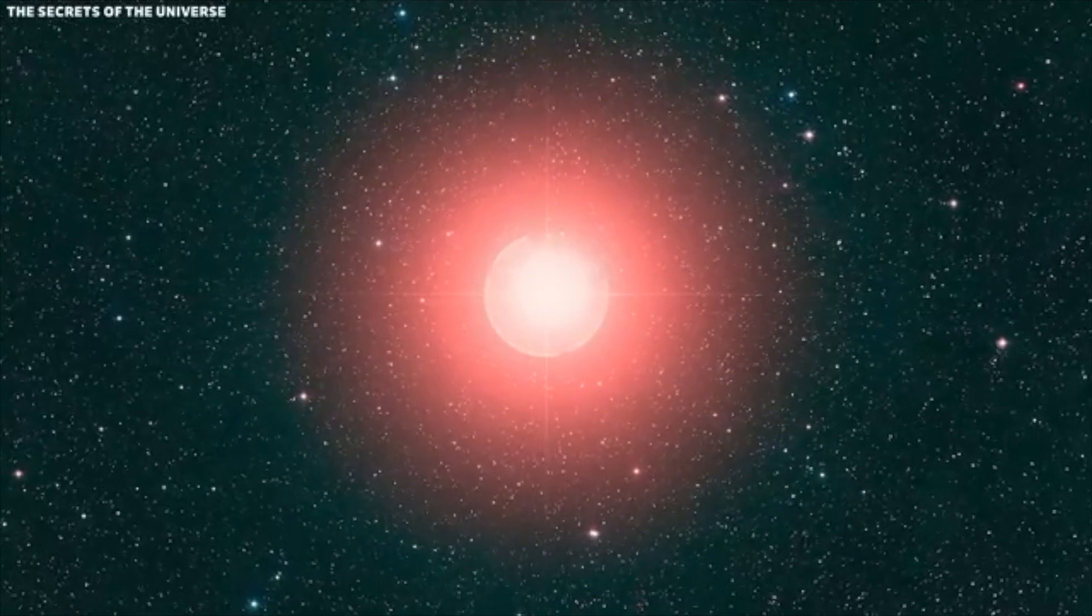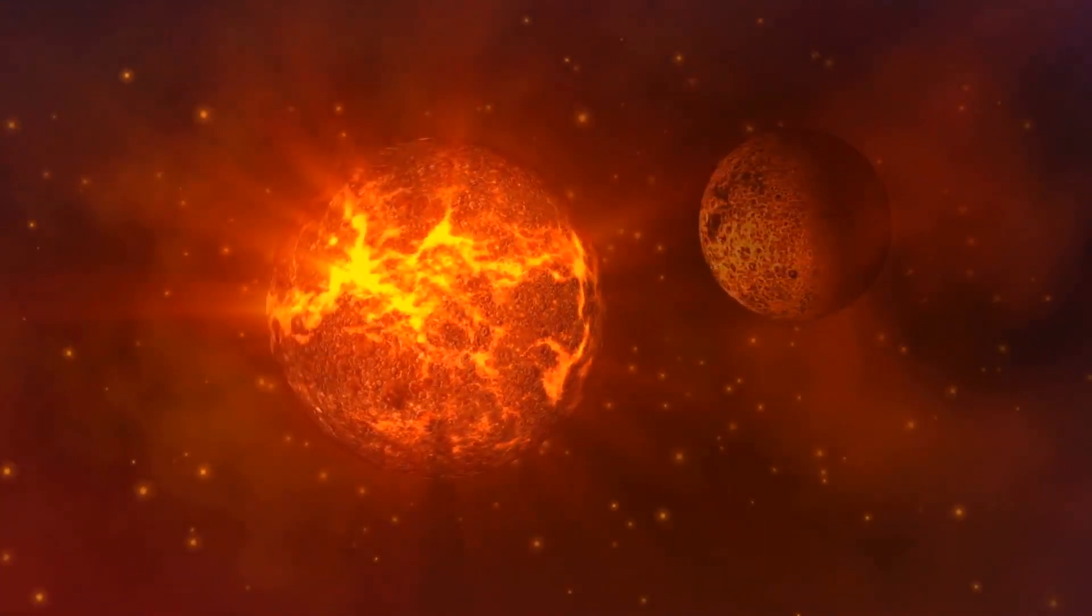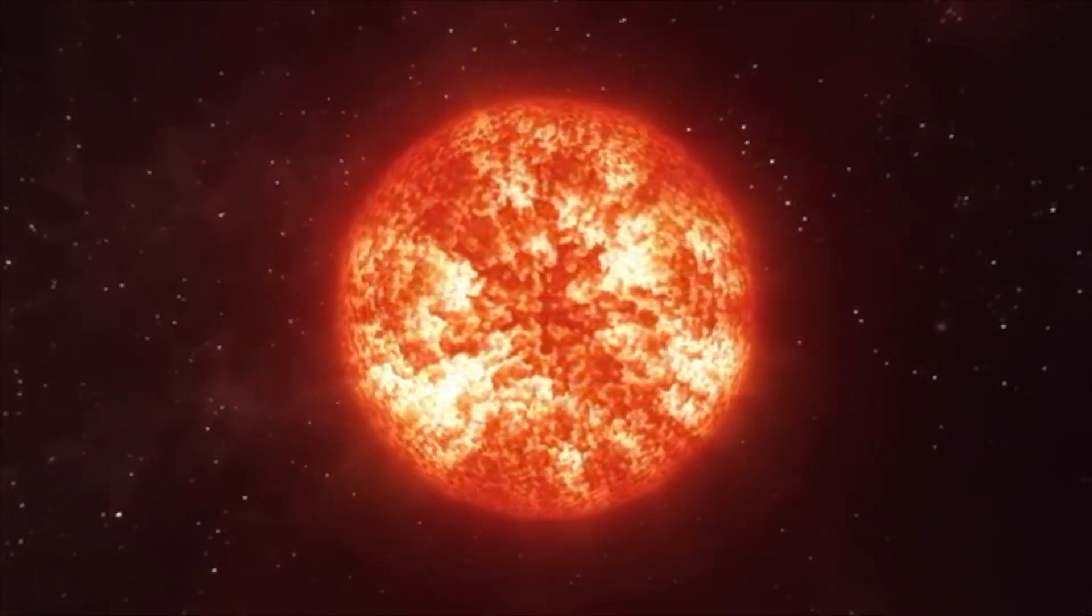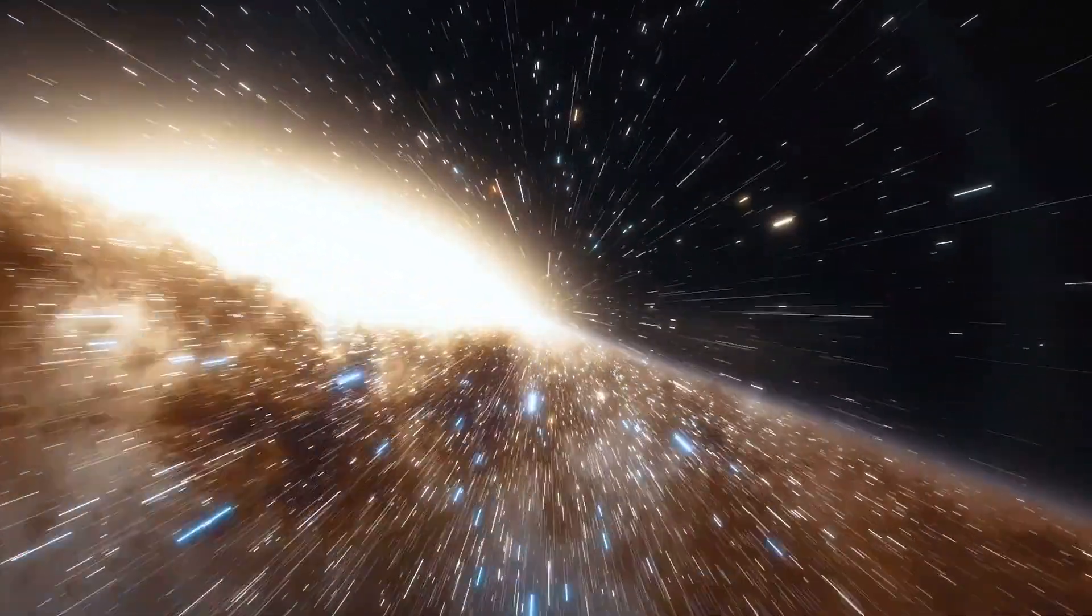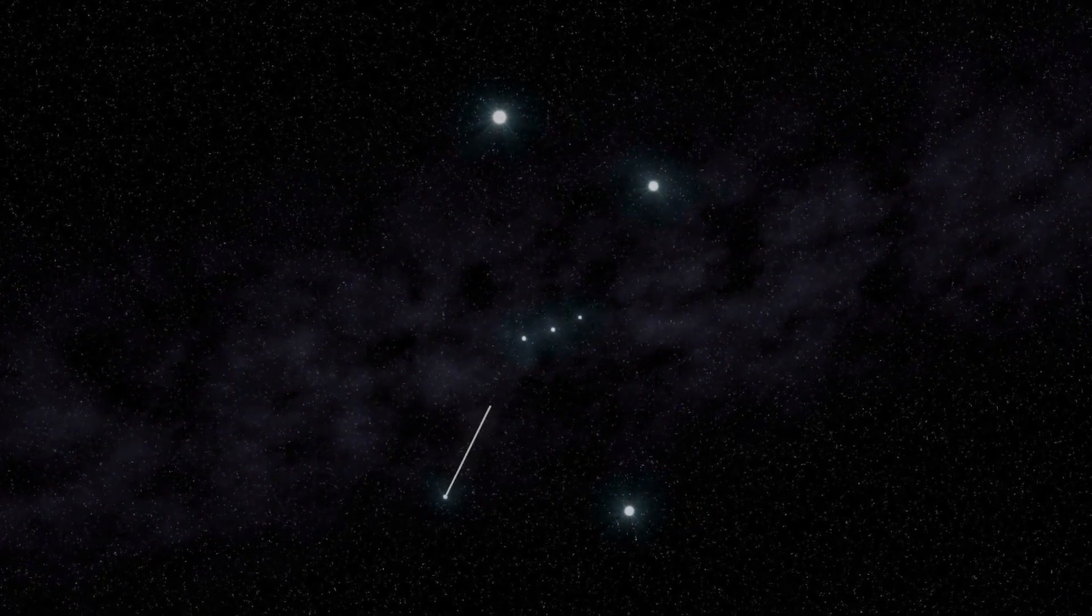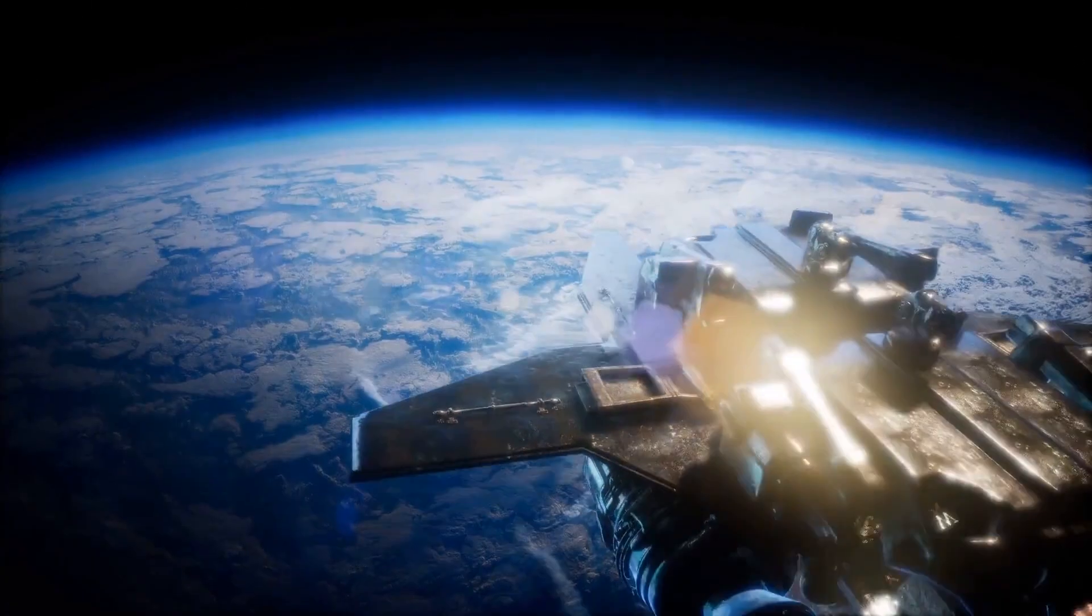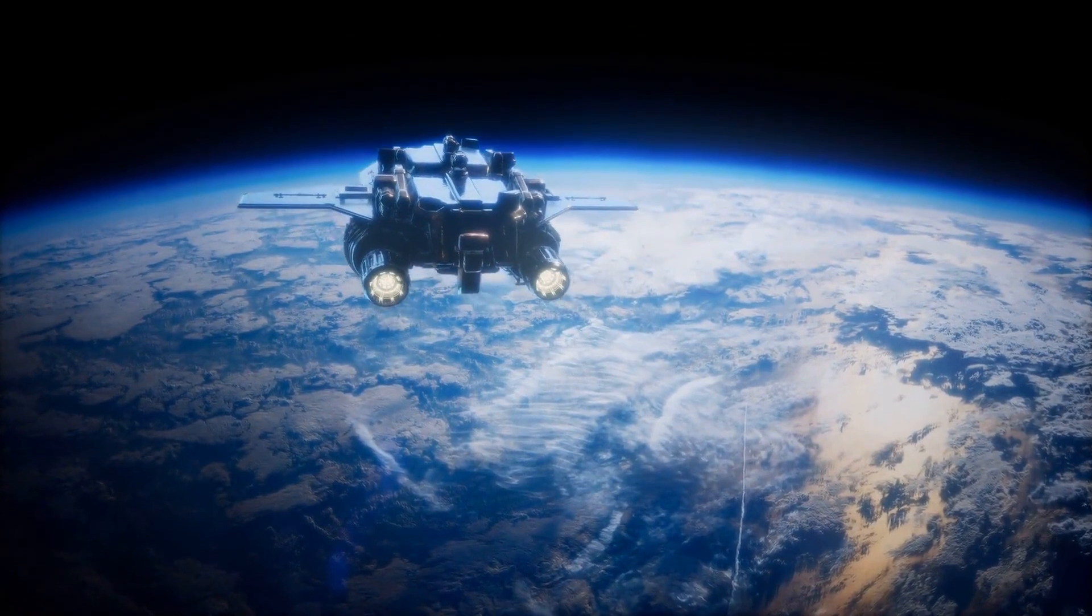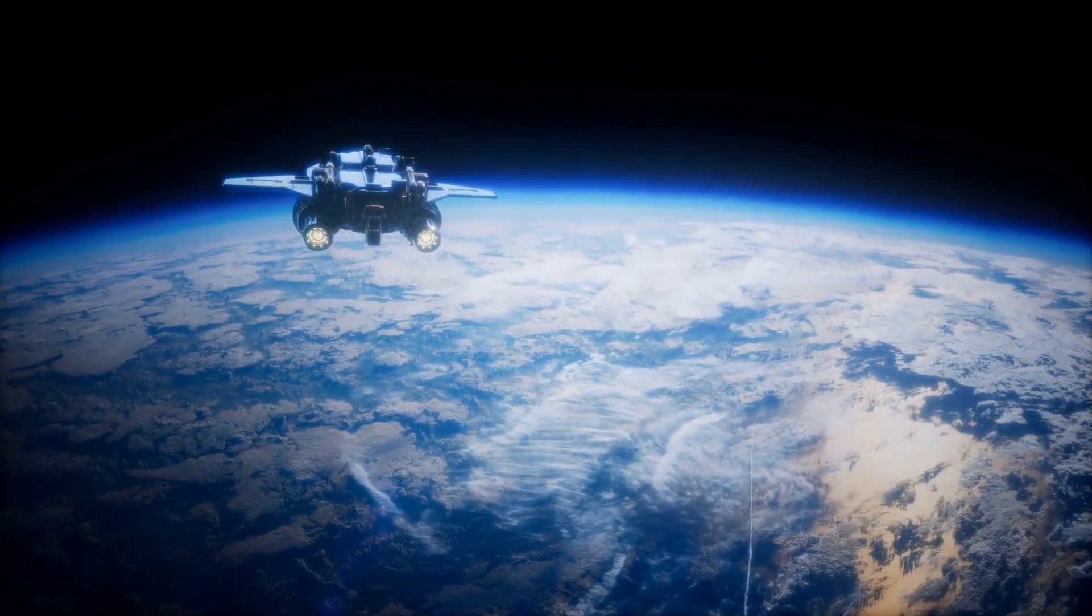Beyond its sheer luminosity, Betelgeuse holds a deep connection to human history and culture, its name echoing across millennia. Named in reference to the Arabic term Yad al-Jaza, which translates to the Hand of Orion, Betelgeuse has been a constant presence in our night sky, documented and observed by ancient civilizations. It has served as a guide for travelers and a source of wonder for sky watchers, with its distinctive reddish color that sets it apart from other bright points forming the Orion constellation.